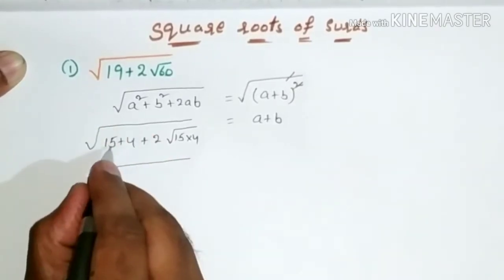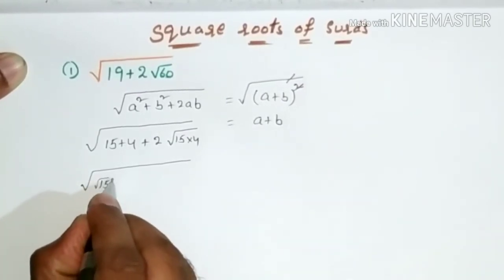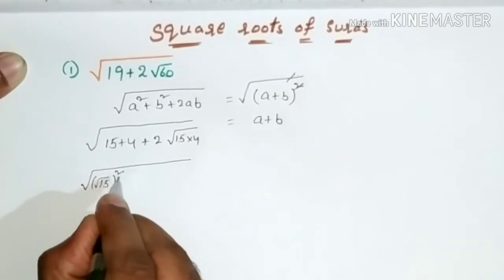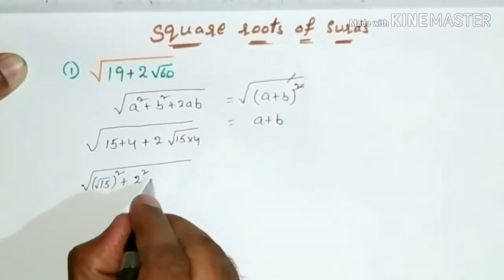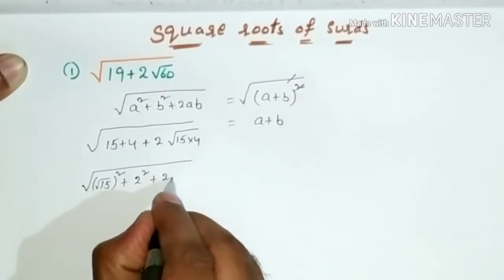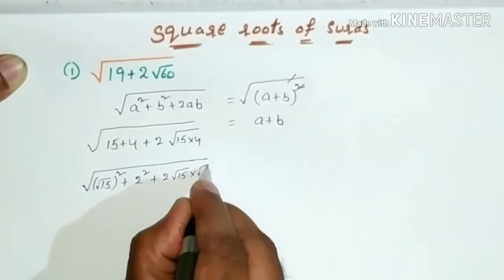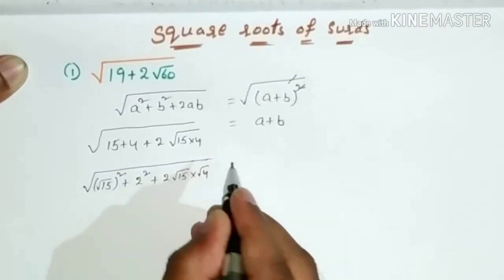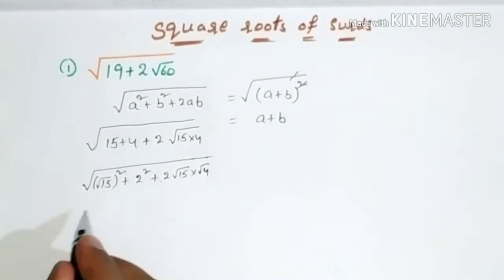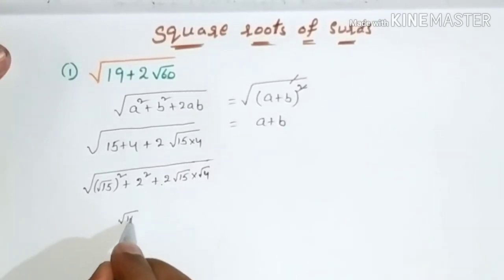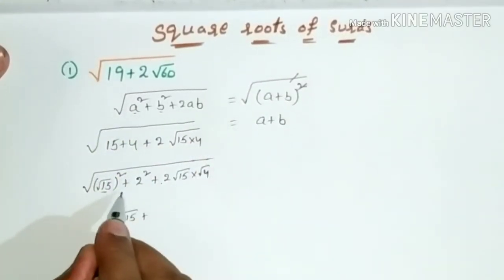Now we write 15 as (√15)² and 4 as (2)², plus 2·√15·√4. Now it is in the form a² + b² + 2ab, where a = √15 and b = 2.